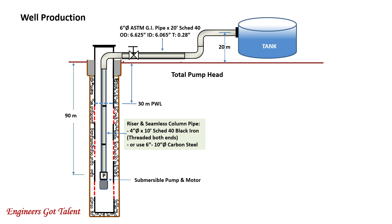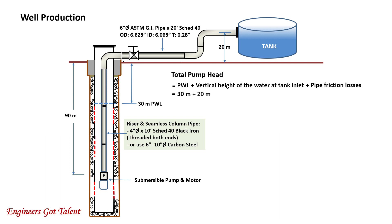First, we compute for the total pump head. The total pump head is the measure of the pump's ability to push fluids through the system against gravity — head is a height. The formula is PWL (production water level) plus vertical height of the water at tank inlet plus the pipe friction losses. Pipe friction losses are the amount of energy the piping system loses due to fluids in motion meeting resistance against the pipe's internal surface, pipe bends, elbows, valves, and fittings. Substituting values: PWL is 30 meters, vertical height is 20 meters, and pipe friction losses are assumed to be 5 meters. So the total pump head is equal to 55 meters or 180.4 feet.